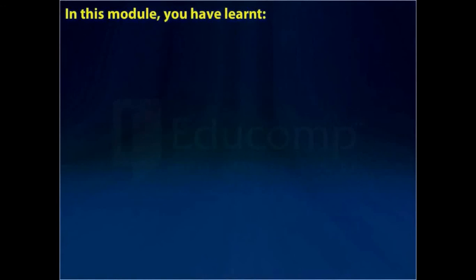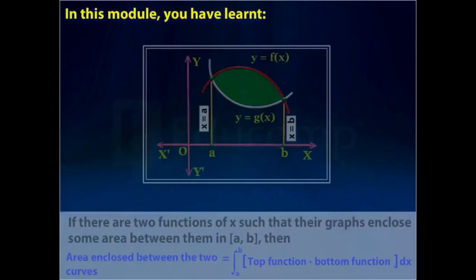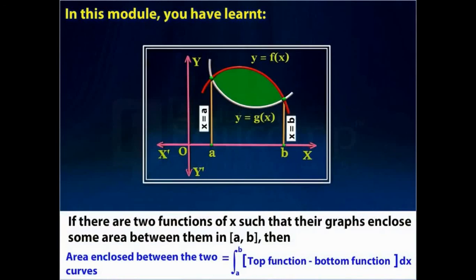In this module you have learned: if there are two functions of x such that their graphs enclose some area between them in the closed interval a to b, then the area enclosed between them is equal to a definite integral from a to b of the top function minus the bottom function, whole into dx.